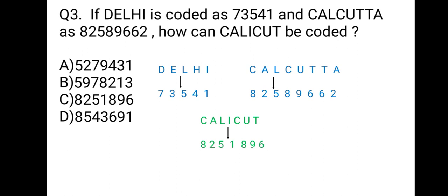Now, you can match your answer from the given options. So, answer is C, 8251896. So, students, this was another form of coding decoding. Now, there is one more type of coding decoding. Let's practice that.